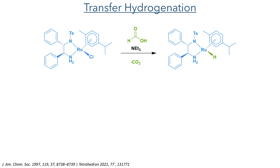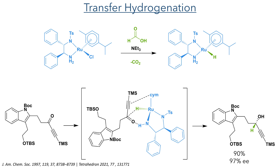The authors then carried out an asymmetric transfer hydrogenation. This reaction uses a ruthenium catalyst with a chiral Ts-DPEN ligand, which reacts with formic acid and triethylamine to form the active hydride species. Due to the chiral nature of the ligand there is only one favourable orientation for the two molecules to interact, and this allowed the chiral alcohol to be produced in a 90% yield with a 97% ee.